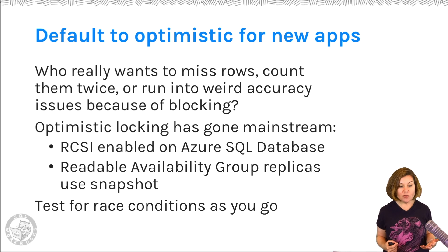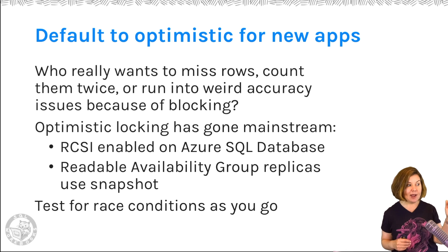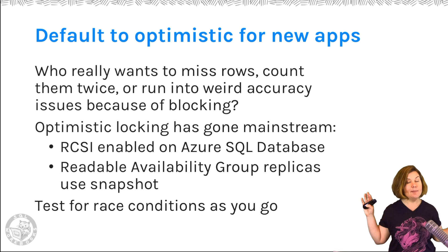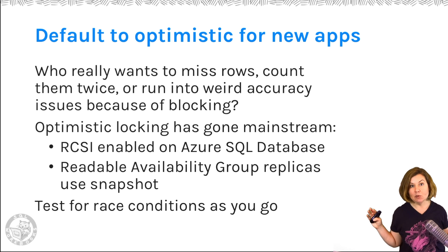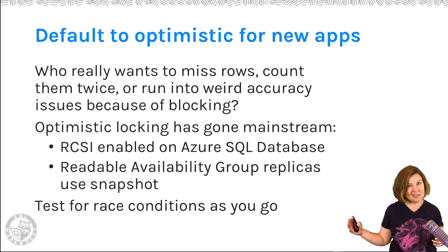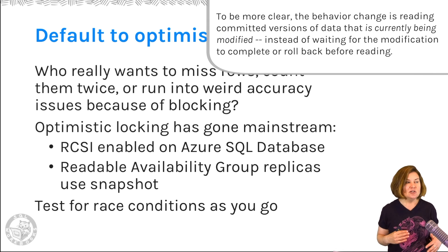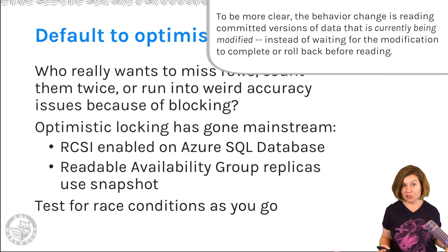Some code in your legacy databases in SQL Server may have been written under the assumption that while you're modifying data, you're going to block anyone from reading it. And you may have some transactions that, if you suddenly let people start reading committed versions of the data, you start hitting a race condition that returns incorrect results.